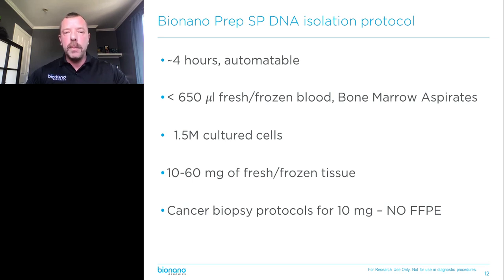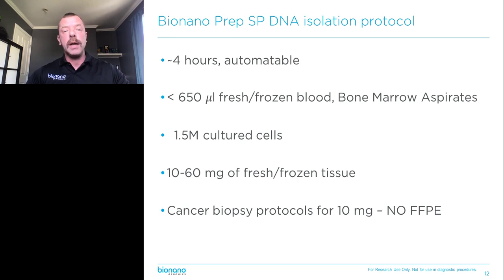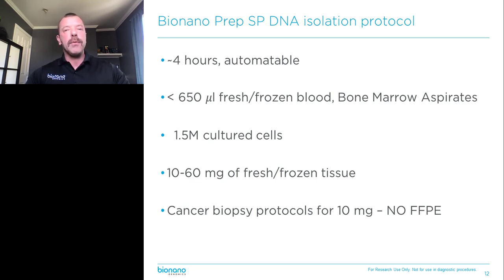We can work with bone marrow aspirates as well. We can work with cultured cells — a million and a half — or we can work with as little as 10 milligrams of fresh or frozen tissue, such as a cancer biopsy. Keep in mind that we cannot work with FFPE-treated cancer samples because the DNA is just too fragmented there.